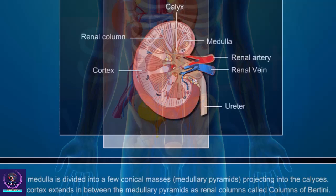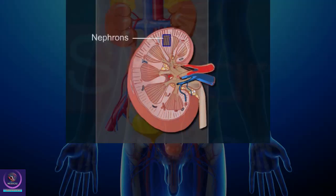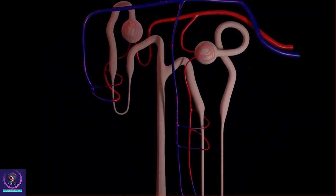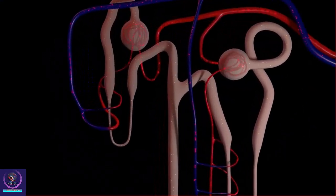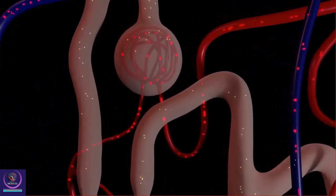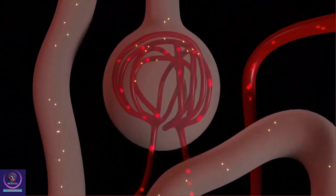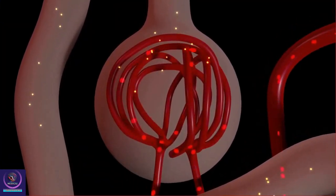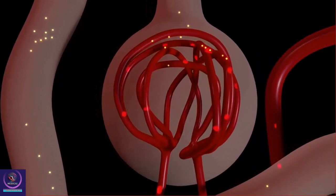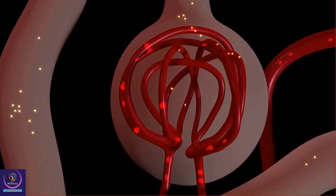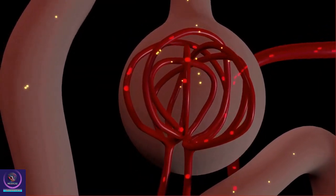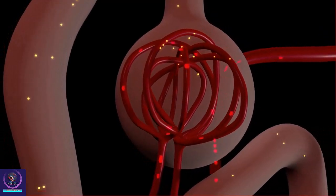The nephron is the functional unit of the kidney. It is complex and tubular in structure. Nearly one million nephrons are found in each kidney. Each nephron has two parts.